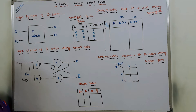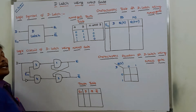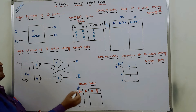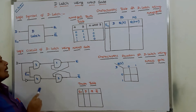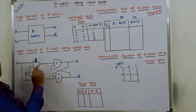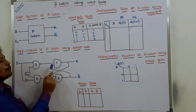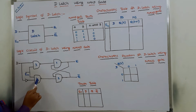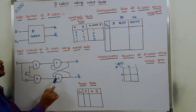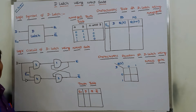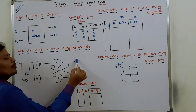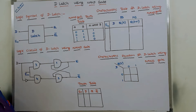Now, how to write the truth table for D latch? The output of the third NAND gate is connected as one input for the first NAND gate, and the output of the fourth NAND gate is connected as input for the second NAND gate, and finally we get the outputs Q and Q bar.